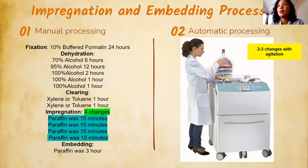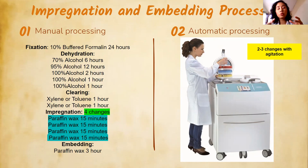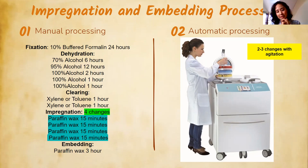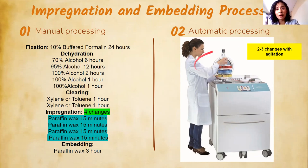Processing many cassettes at once speeds up the turnaround time in histopathology. Tissue processing itself takes about one day, but then the pathologist still needs to review, confirm, and possibly request more sections — so the total turnaround time in histopath can be about one week. With an automatic processor, turnaround time is improved. For manual processing, four changes are needed; for automatic, only two to three changes are required due to agitation.